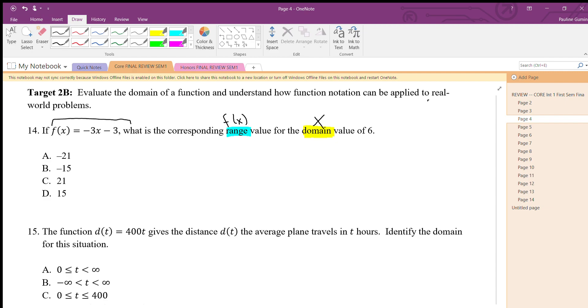What this problem is actually asking us to do is to find f(x) when we plug in six. Well, let's do that. I'm going to replace this x with the six. f(x) equals negative three times six minus three, and when we solve that we get negative 21.